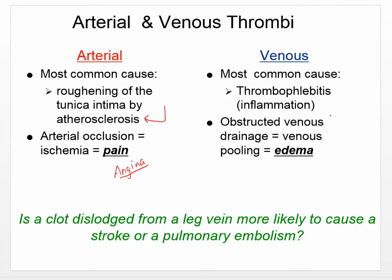Thrombophlebitis causes obstructed venous drainage. The veins are trying to send blood up back to the heart. If you have an obstruction of venous flow in the legs, blood can pool and build up, causing increased pressure and edema. That's one of the noticeable things that happens with a thrombus in the veins.